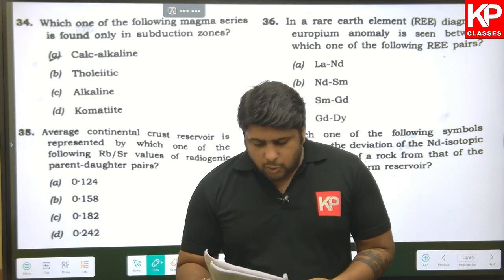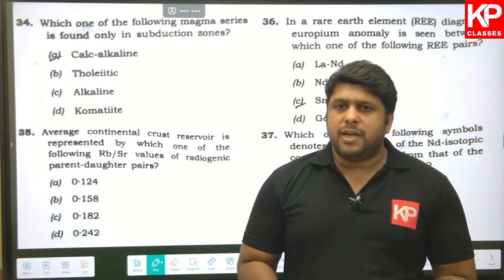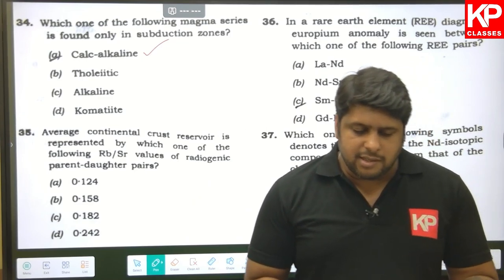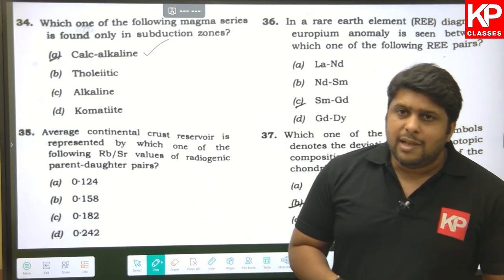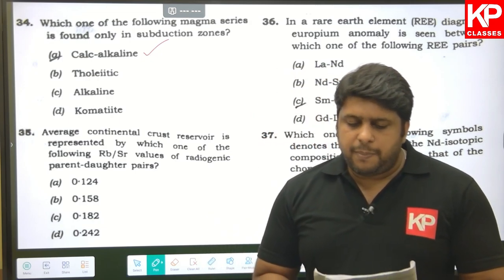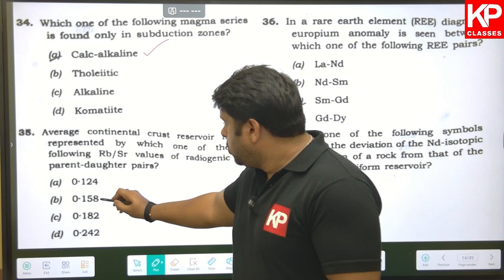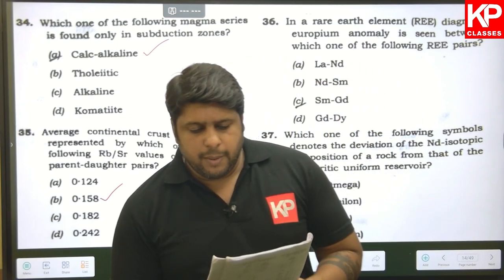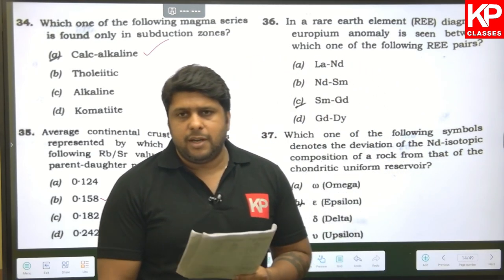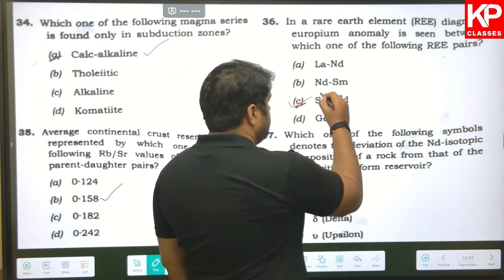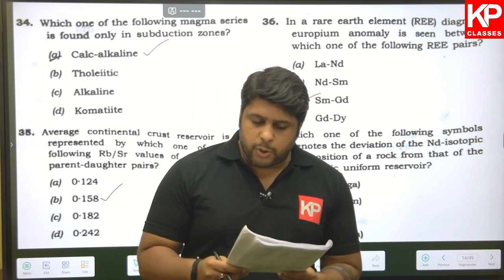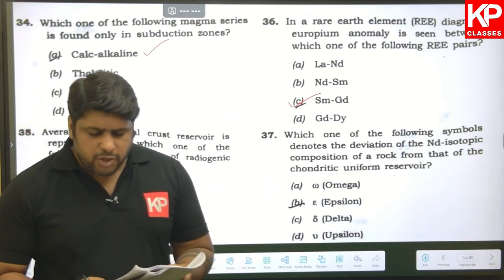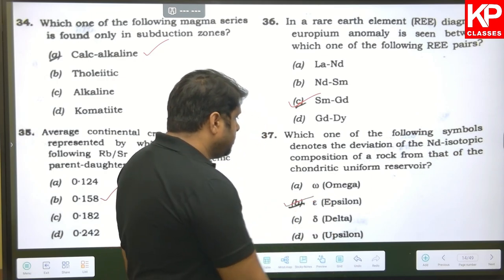Question thirty-four: which magma series is found only in subduction zones? The answer is calc-alkaline rocks. Question thirty-five: average continental crust reservoir is represented by an Rb/Sr value of 0.158. Question thirty-six: in a rare earth element diagram, the europium anomaly is seen between Sm and Gd, so C is the right answer. Question thirty-seven: the symbol that denotes the deviation of the isotopic composition of a rock from that of the Chondritic Uniform Reservoir is epsilon, so B is the right answer.